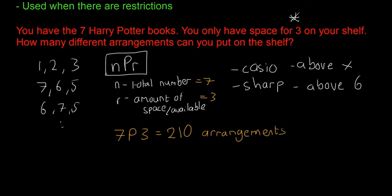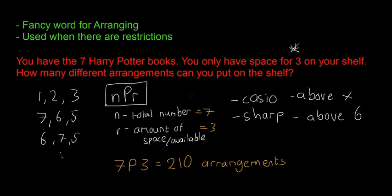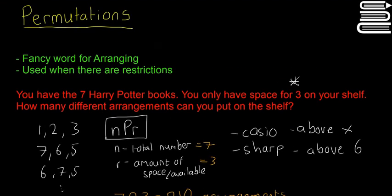That's basically all there is to permutations—they're simple enough. If you have a total number that's bigger than the amount of space available, you use the nPr button on your calculator to calculate the different permutations. In the next video we're going to look at combinations, which are a little bit different. This time we're not arranging, and we'll see how they differ.